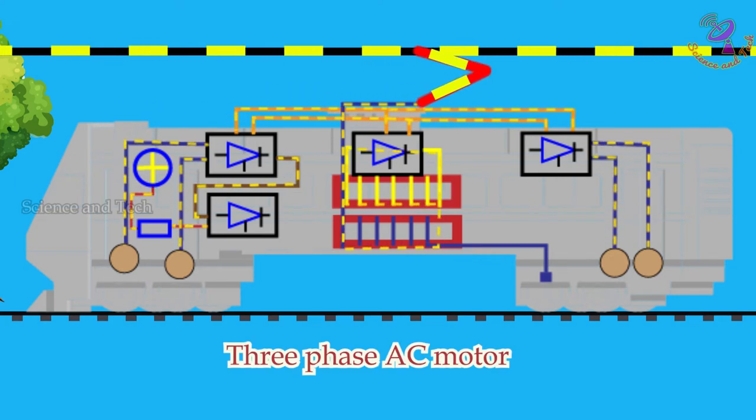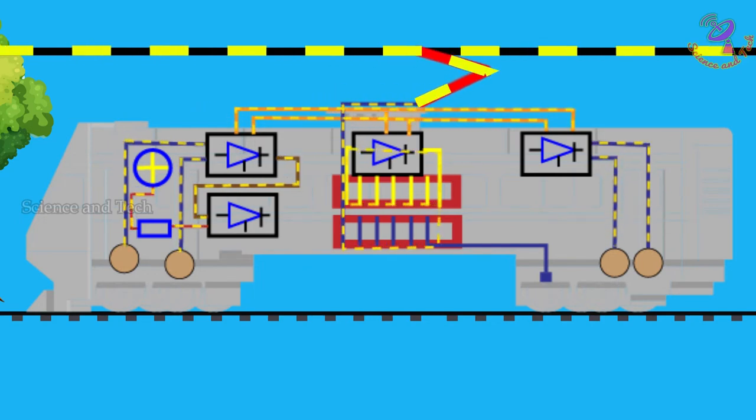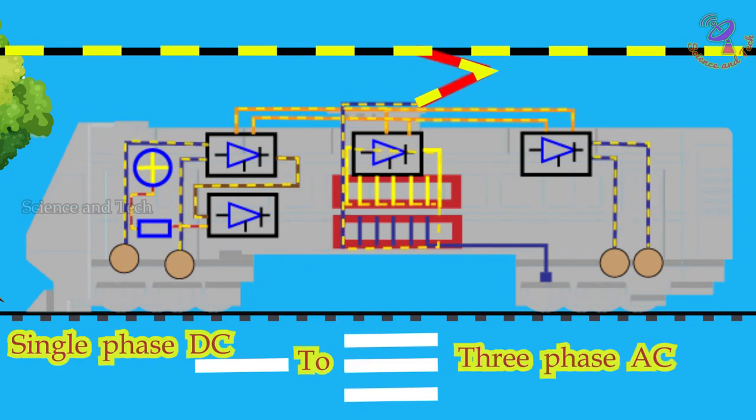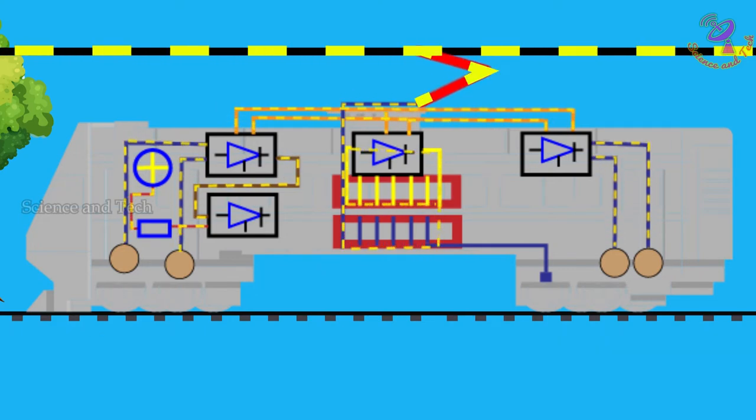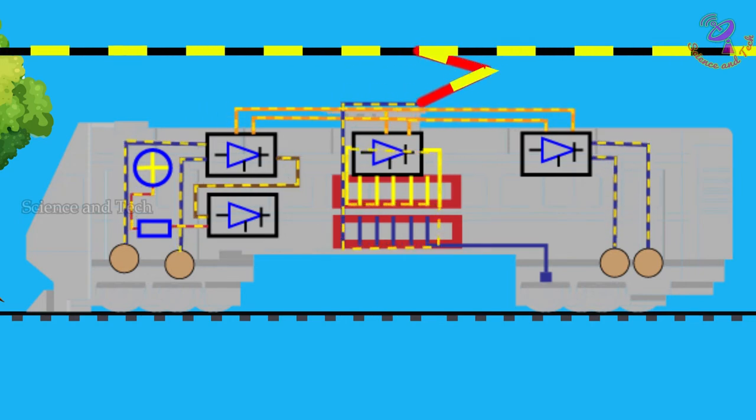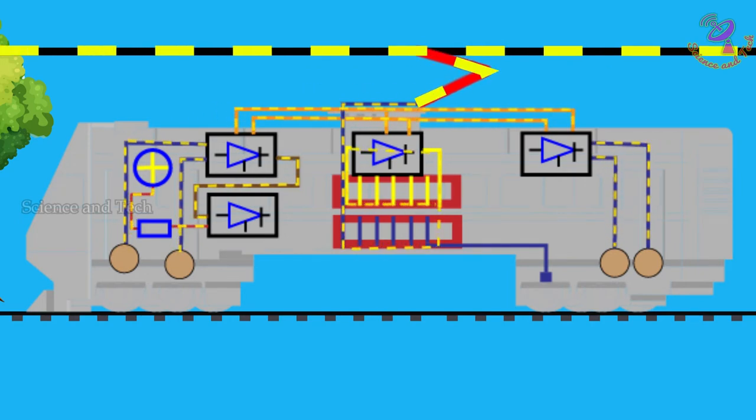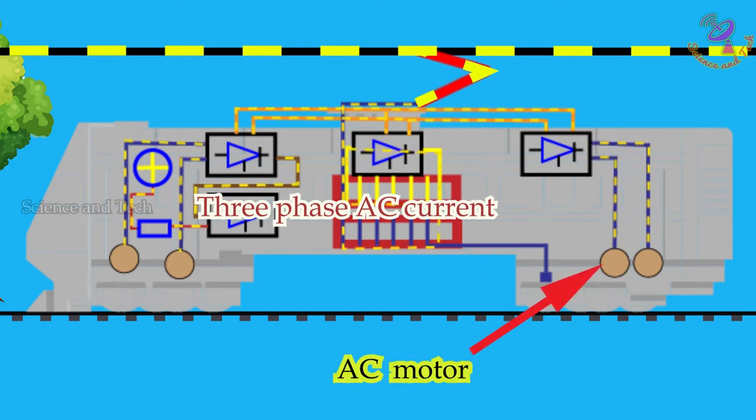Also the three-phase AC motor is used to run the train. The inverter converts from single-phase DC to three-phase AC to produce three-phase current. The converted three-phase AC power supply will transfer to the AC motor and the AC motor starts to rotate. The wheels rotate with the motor. Whenever the power supply transfers to the AC motor, then the train starts to move.